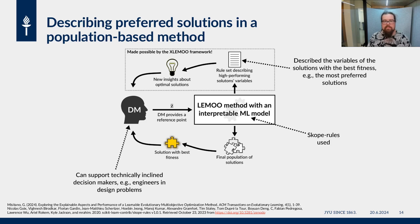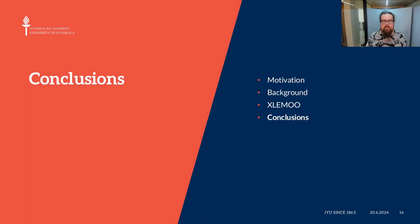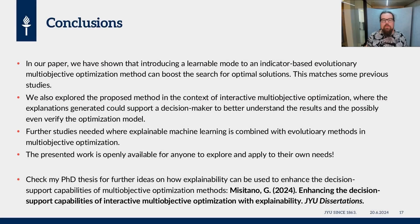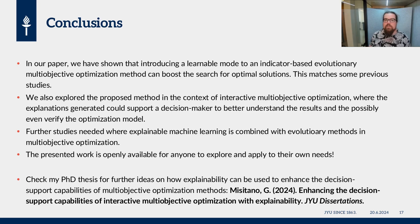Please see the paper for additional details. In my paper, I showed that introducing a learning mode to an indicator-based evolutionary multi-objective optimization method can boost its search performance for optimal solutions. I also explored utilizing explainable machine learning models in the learning mode, and explored how the explanations generated by these models could help decision makers. However, to make any definitive claims about the support provided by these explanations, we need a lot of further studies. To facilitate these endeavors, I have provided my work as fully open-source software in the form of a wider software framework, available to anybody to implement their own learning mode of evolutionary multi-objective optimization methods, with or without explainability.